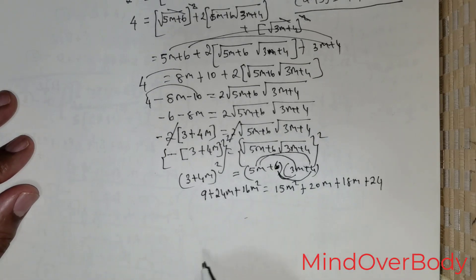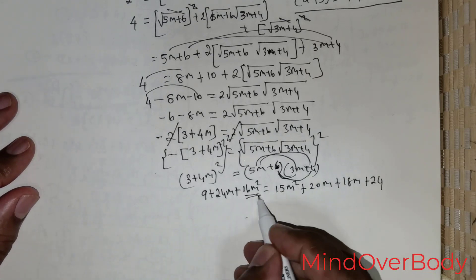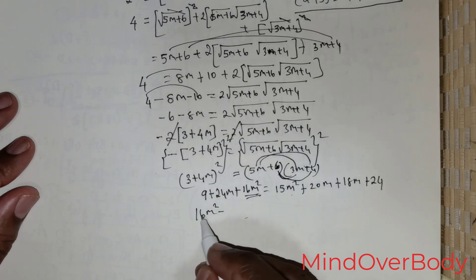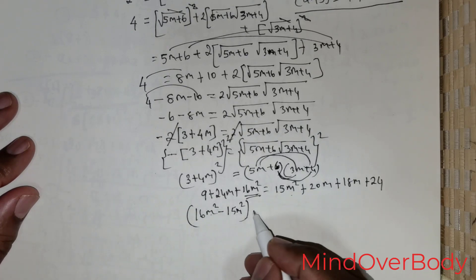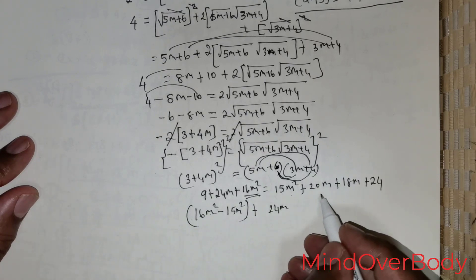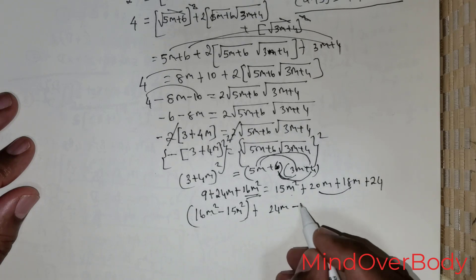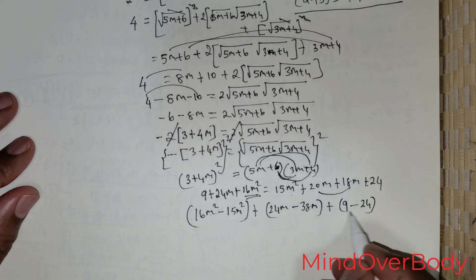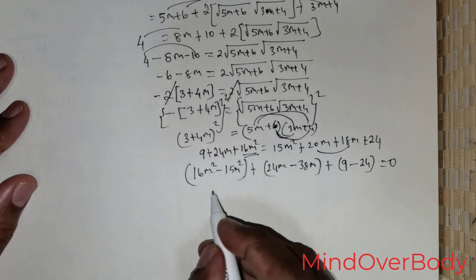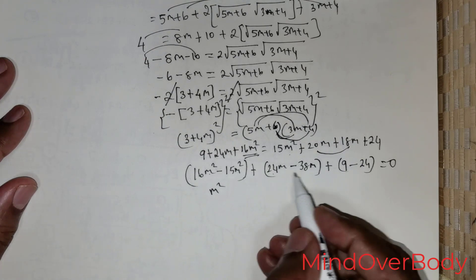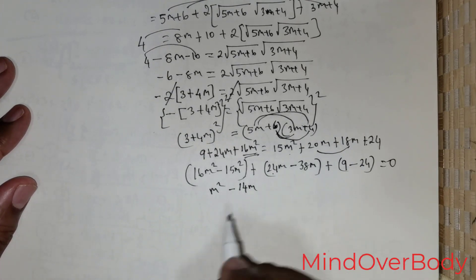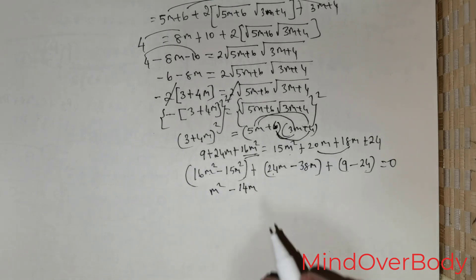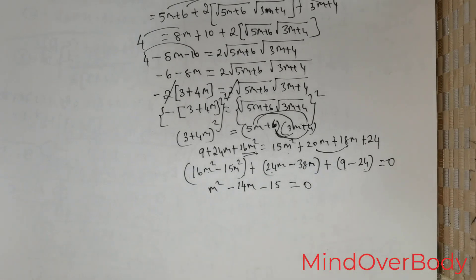I can pull all the right hand side terms to the left side. The left side has 16m squared, so: 16m squared minus 15m squared — that's one term — then I have 24m, and I have 20m and 18m, so that gives negative 38m, and I have 9, and I need to bring in negative 24. So this equals 0. This gives me m squared — and combining 24 and 38 gives negative 14m — and then 9 minus 24 gives negative 15, equals 0.